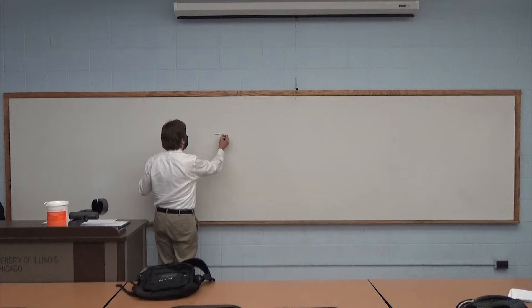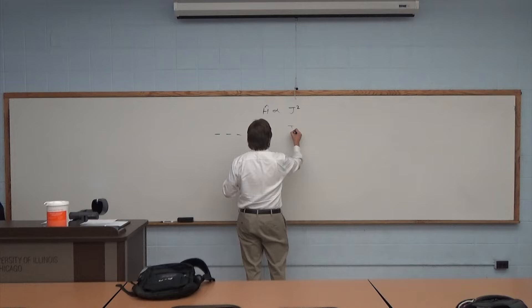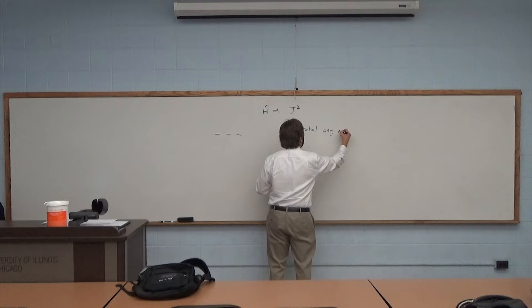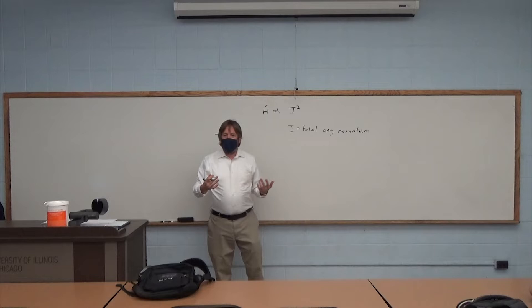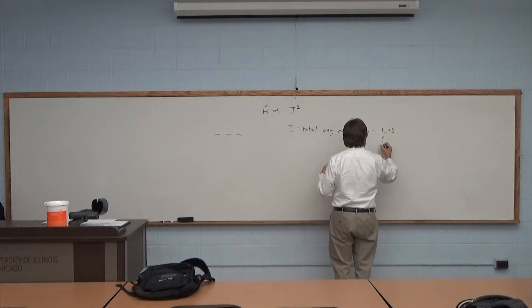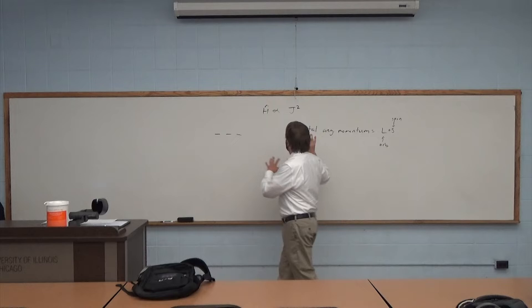Now, part of why we do this: a Hamiltonian is going to be proportional to J squared, where J is the total angular momentum. And of course the way that's going to work is J equals L plus S, where L is orbital angular momentum and S is spin. So we need to have the total angular momentum—I'm just trying to motivate it.